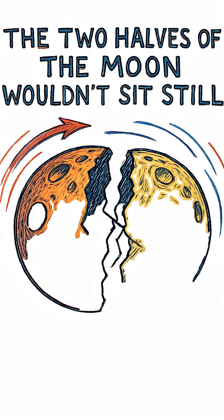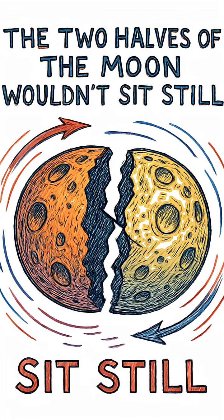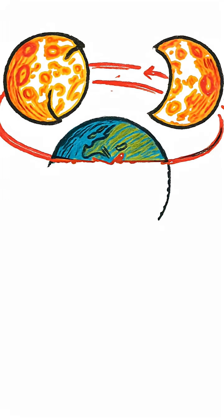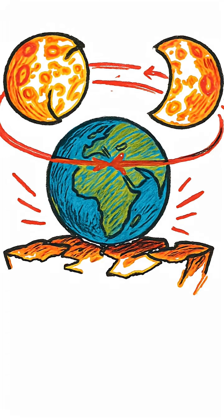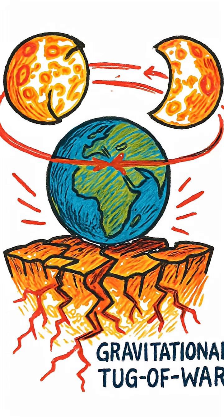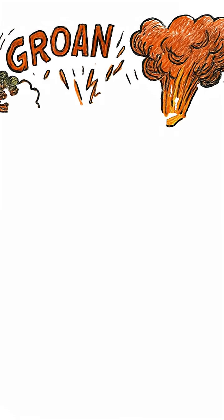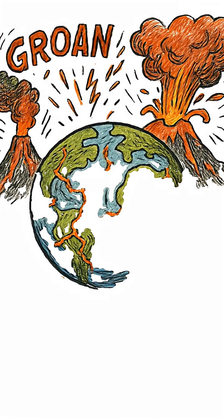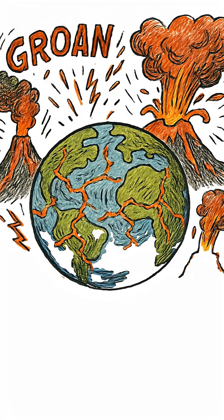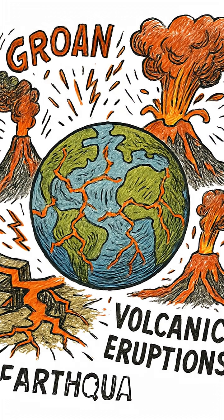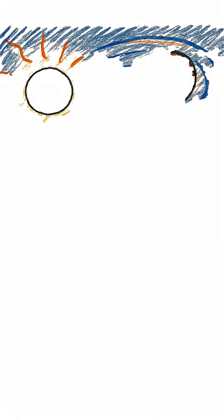The two halves of the moon wouldn't sit still. Their orbits would drift, pulling at each other, creating a gravitational tug-of-war on Earth's crust. The planet itself would groan under the strain, triggering a chain reaction of earthquakes and volcanic eruptions on a scale we've never witnessed.